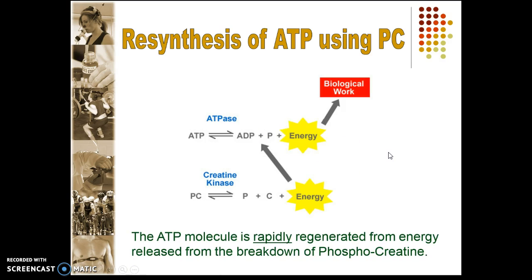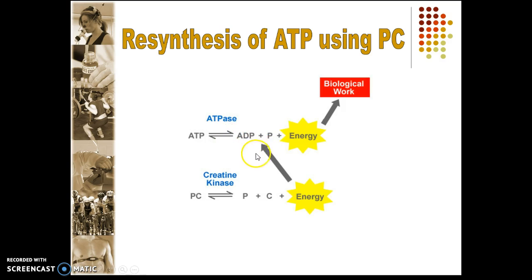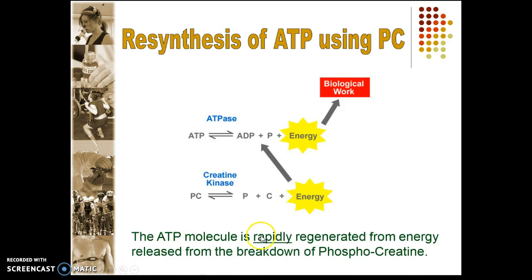To put it all together: ATP is broken down by ATPase, giving ADP plus P plus energy. Because ADP levels rise, this stimulates creatine kinase, which breaks down phosphocreatine (PC) into P plus C plus energy. The spare phosphate plus ADP equals ATP — giving us one molecule of ATP that allows us to work for 15 seconds. The ATP molecule is rapidly regenerated from energy released from the breakdown of phosphocreatine.